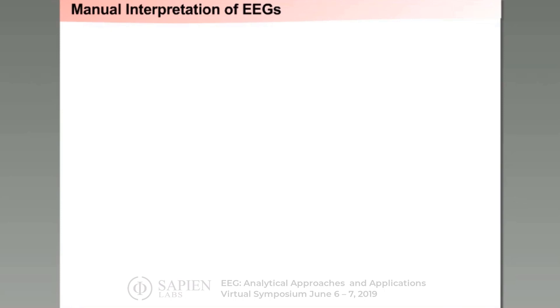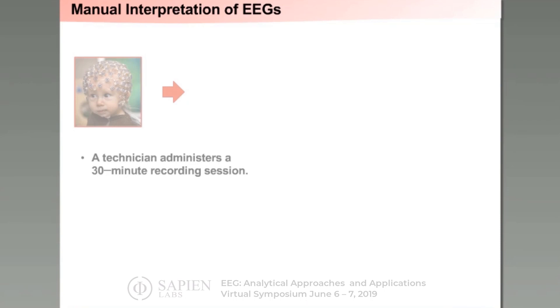Let's first talk a little bit about how EEGs are manually interpreted today, because our ultimate goal is to automatically interpret EEGs using machine learning technology. Typically a technician will administer an EEG. When patients come in they're given a relatively short 30-minute EEG. Depending on the outcome of that, they might be admitted to the hospital for a more extended EEG that can often run between one day and three days.